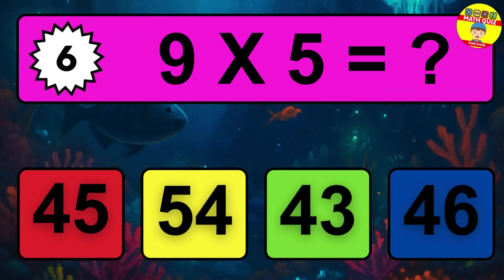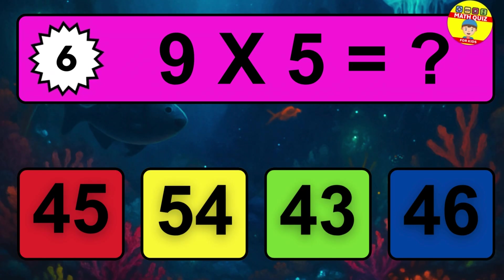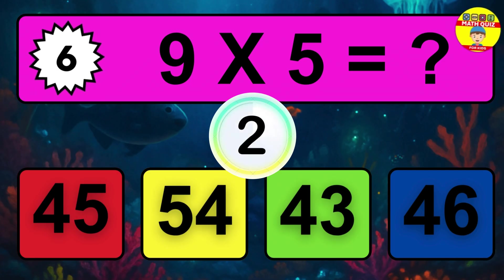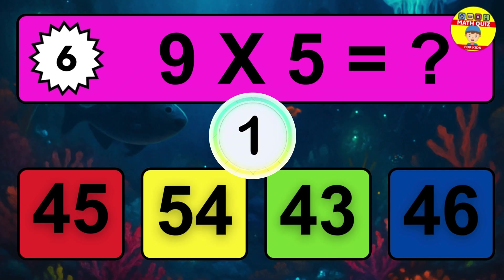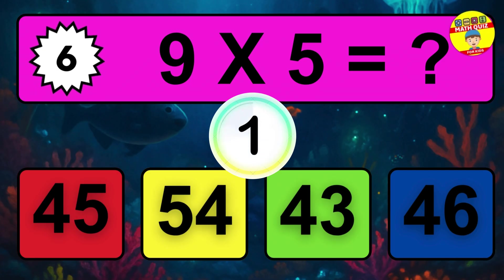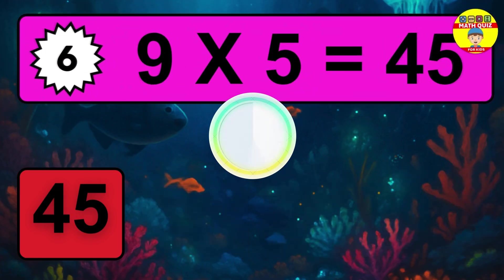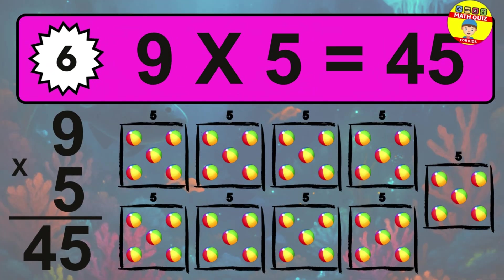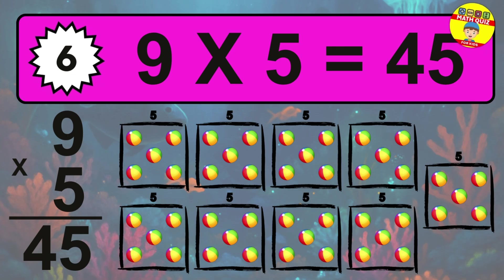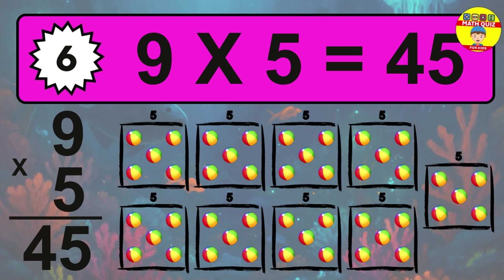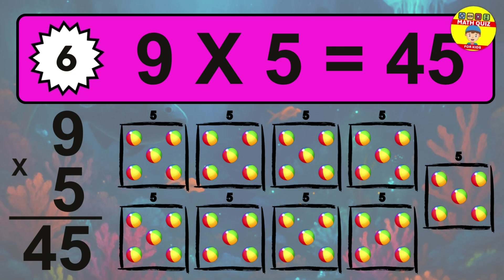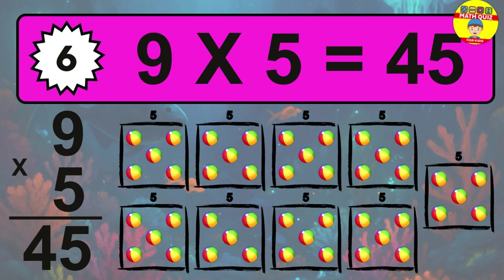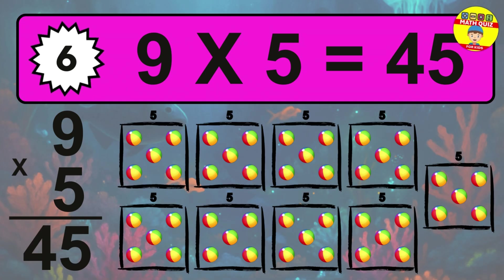Question 6. Nine times five equals what? The answer is nine times five is 45. To calculate, we have nine groups with five balls each one. So how many balls do we have? Forty-five balls.